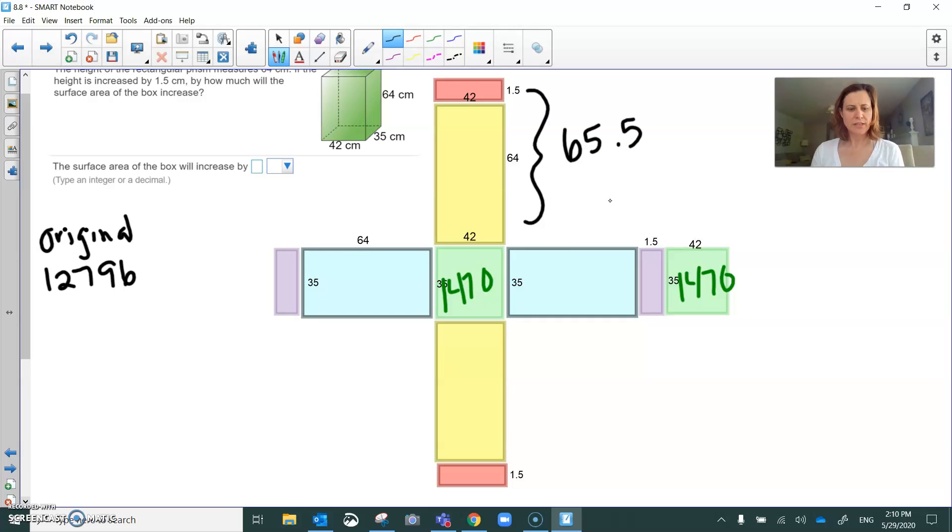Okay, so the yellow areas are 65.5 times 42. Those are the dimensions and that's 2751. And that includes this red part. And then the blue purple parts are now 65.5 times 35, which is 2292.5. 64 plus 1.5 times 35, just like that.